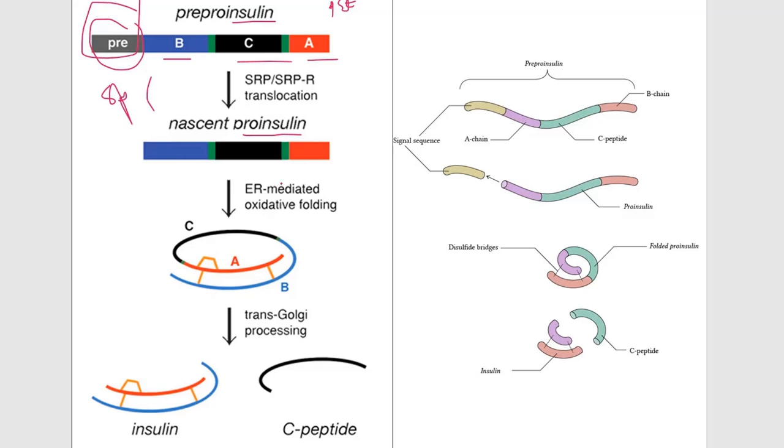Then pro-insulin will get translated. After translation, it will look somewhat like this. We have the A chain, B chain, and C chain. This is the A chain, B chain, and C chain. In between the A and B chain, we have the C chain.